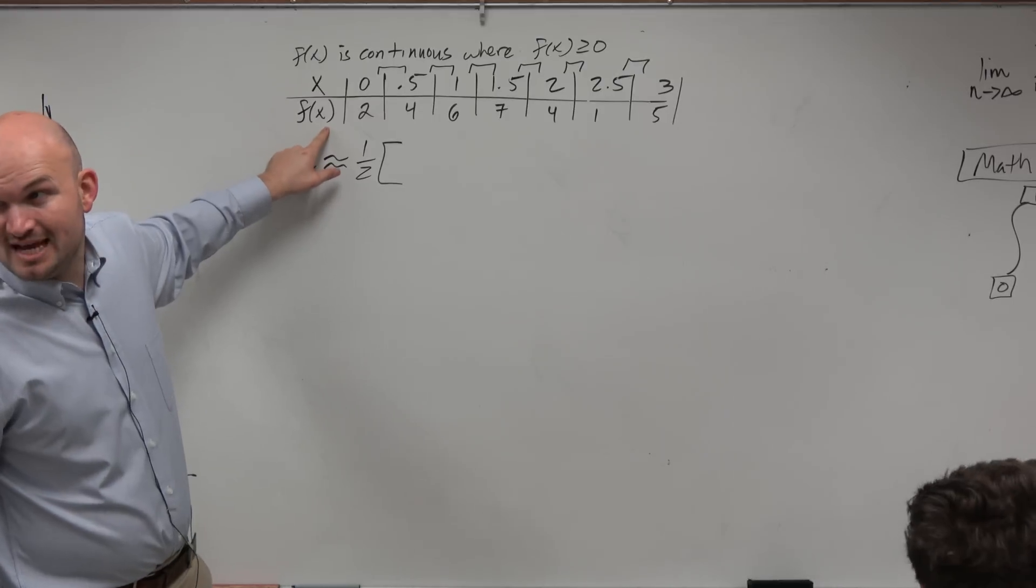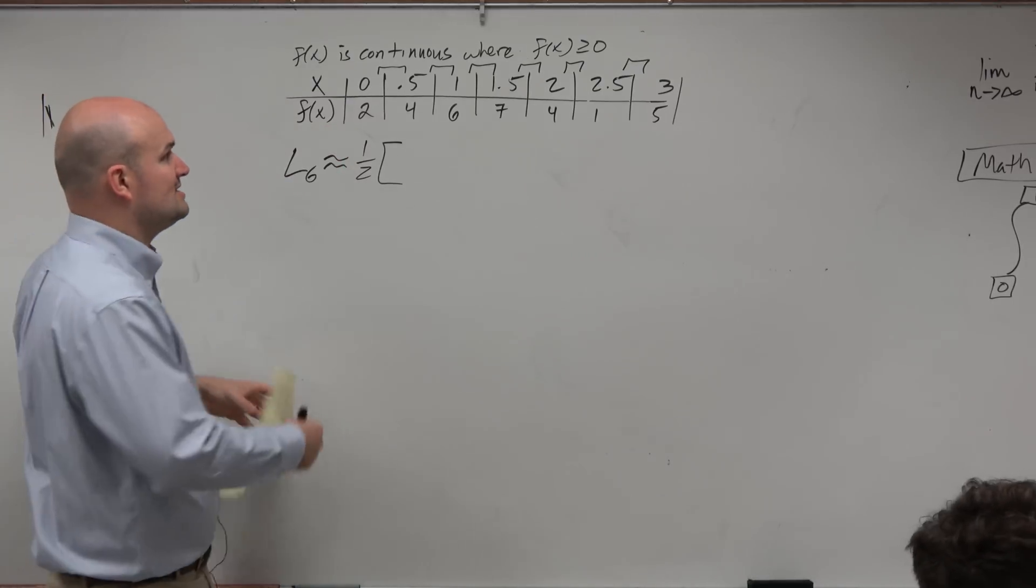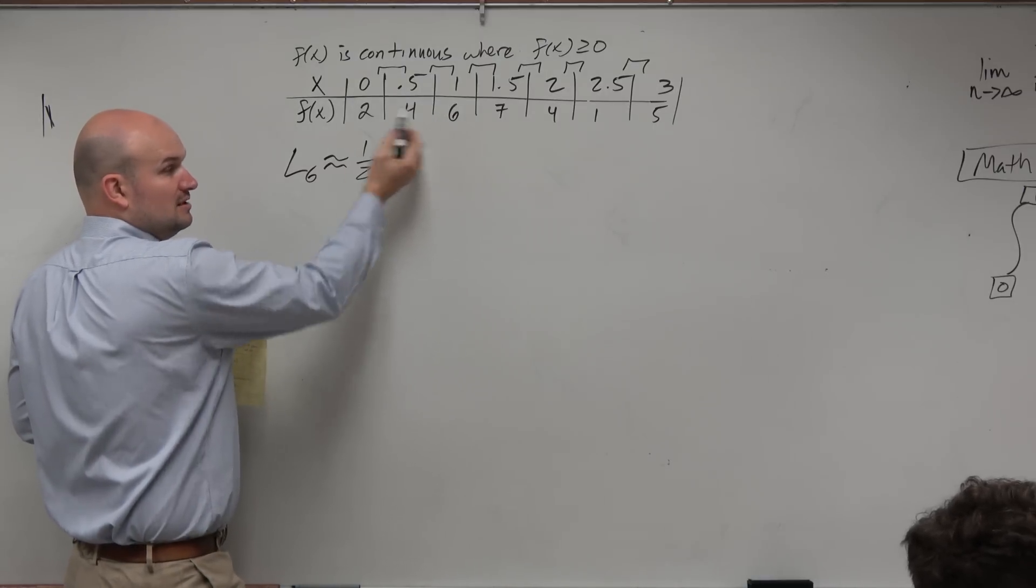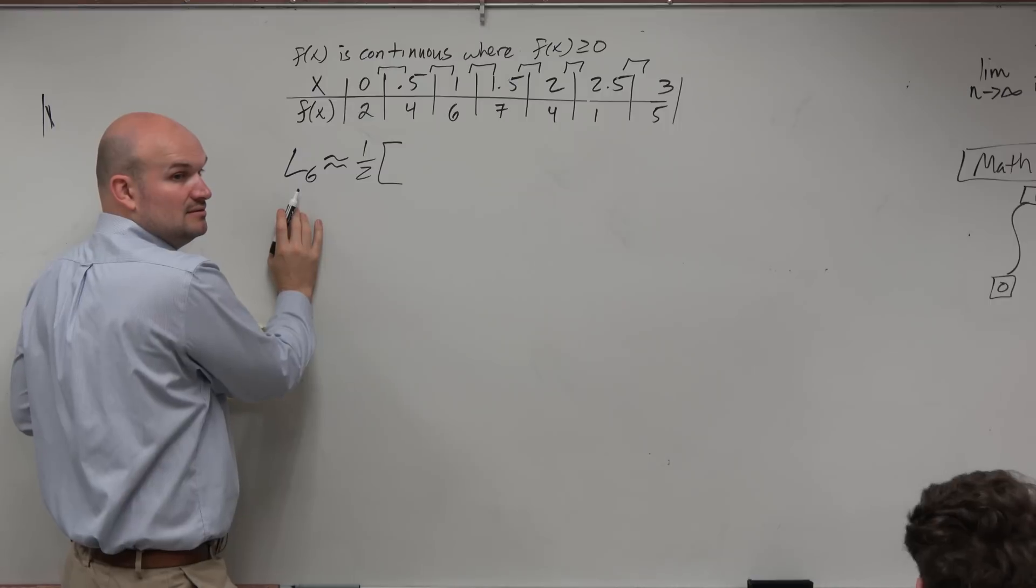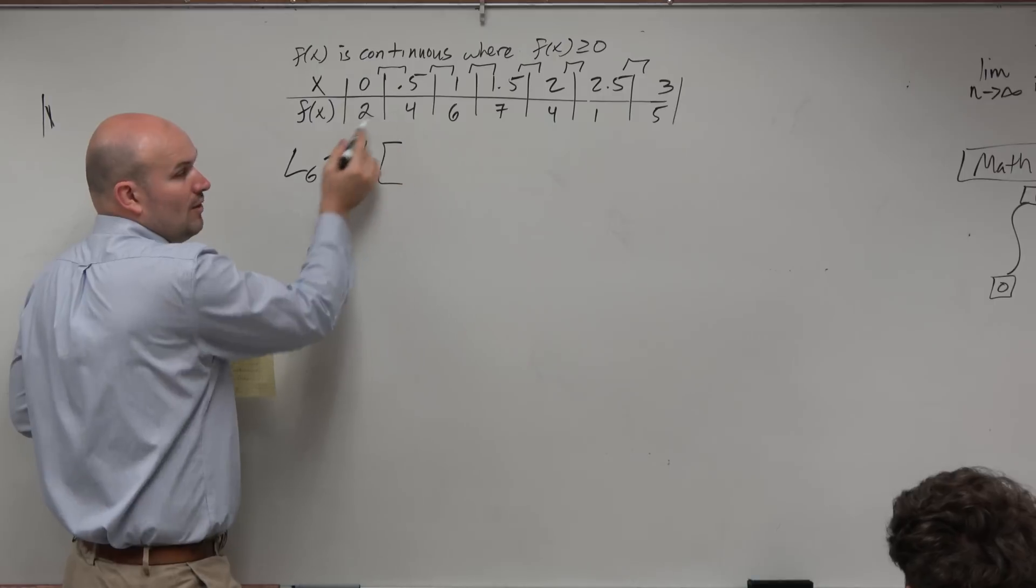Well, this is nice from the table, because we don't have to calculate that, right? But the important thing is we have to understand, what is the left hand interval here? What is the left hand height? The left end point, what is the left end point's height? Should it be 2 or 4?